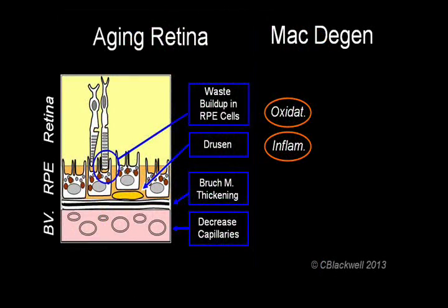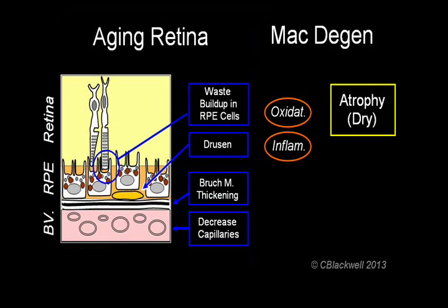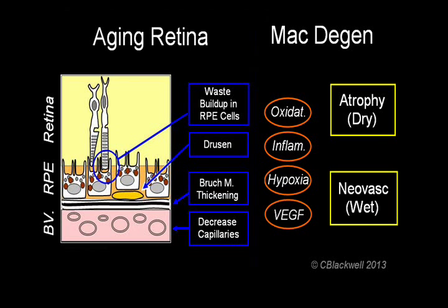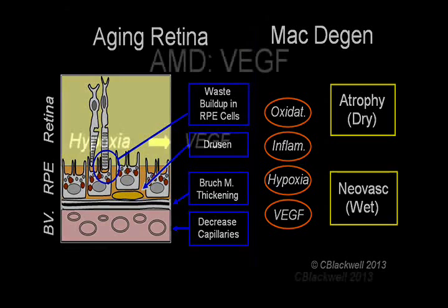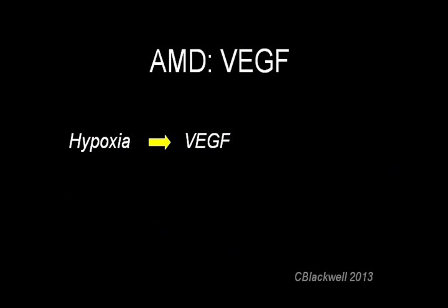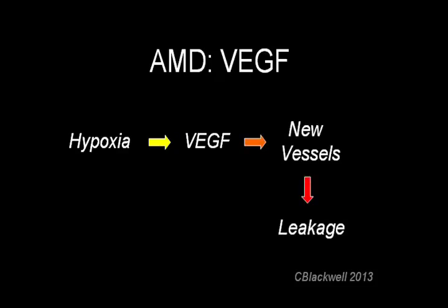Current research suggests that the process of oxidation and inflammation damage the pigment cells causing them to atrophy or die, leading to the dry kind of macular degeneration. The other processes we mentioned earlier reduce the amount of oxygen reaching the retina. Starving for oxygen, the retina secretes VEGF, a growth factor responsible for the wet kind of macular degeneration. Most of the current treatments for wet macular degeneration try to block the action of VEGF.